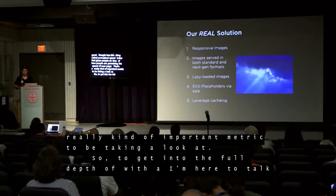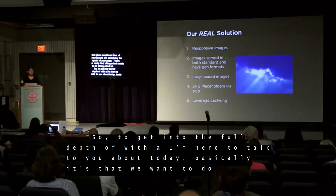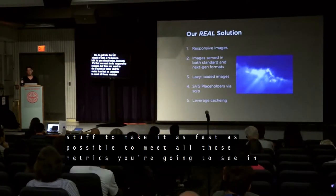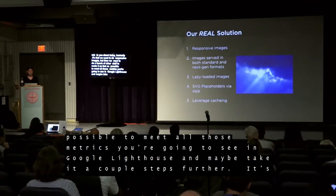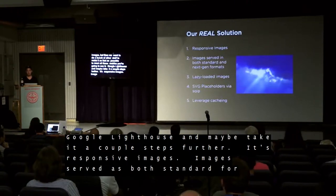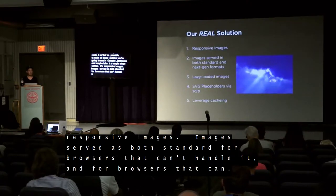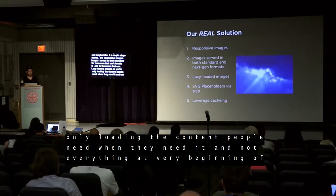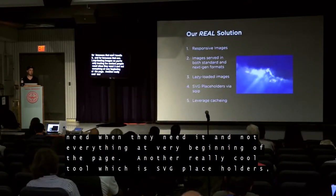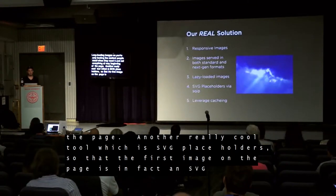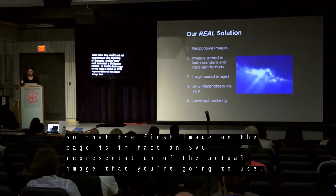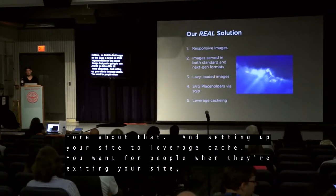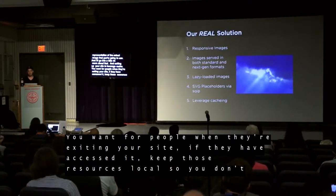To get into the full depth of what I'm here to talk about today: we want to do responsive images, but then we want to do a bunch of other stuff too to make it as fast as possible and meet all those metrics you'll see in Google Lighthouse. So it's responsive images, images served as both regular formats for browsers that can't handle WebP and as WebP for browsers that can, lazy loading so you're only loading content when people need it, SVG placeholders so the first image loaded is an SVG representation of the actual image, and setting up your site to leverage caching — keeping resources local so you don't have to send them across the network again.